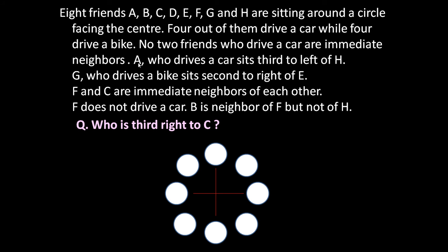Our analysis starts here: A, who drives a car, sits third to left of H. We can start from any point. Let us suppose we place A here. A sits third to the left of H, so this is H. Counting left from H: 1, 2, 3 — so A is third left to H. And A drives a car.